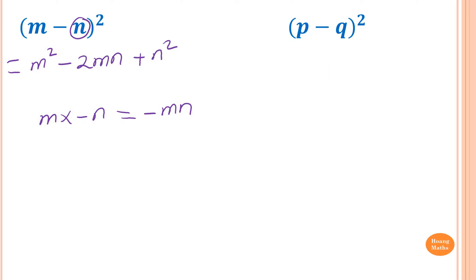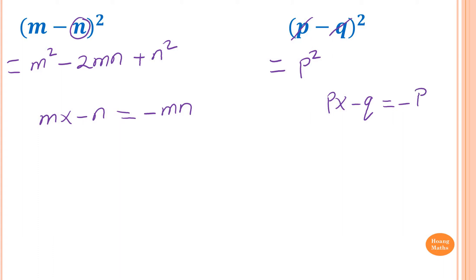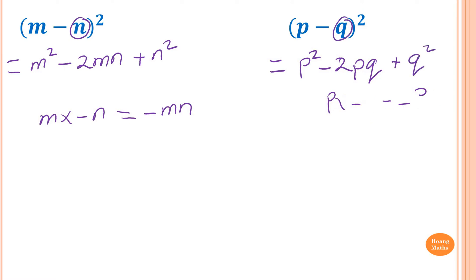Please stop the video and try this one yourself. We square p first to get p², then p times negative q is −pq, and we double it to get −2pq, then add q². So the answer is p² − 2pq + q².